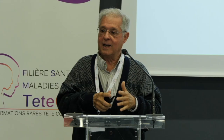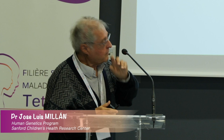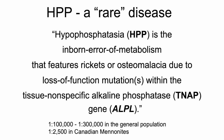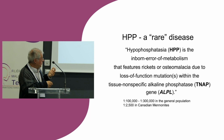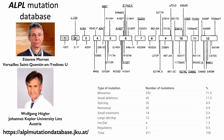Now we'll move into hypophosphatasia. Hypophosphatasia is an inborn error of metabolism featuring rickets and osteomalacia, due to loss of function of the alkaline phosphatase gene — tissue-nonspecific alkaline phosphatase, ALPL. It's a rare disease. The incidence varies between 1 in 100,000 to 1 in 300,000 in Europe and the U.S., and 1 in 2,500 in Canadian Mennonites.